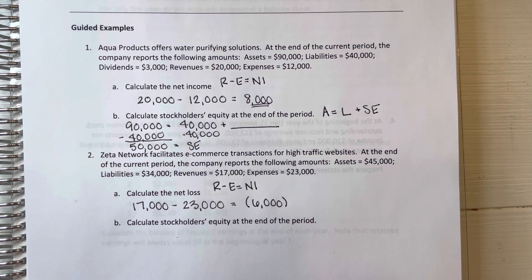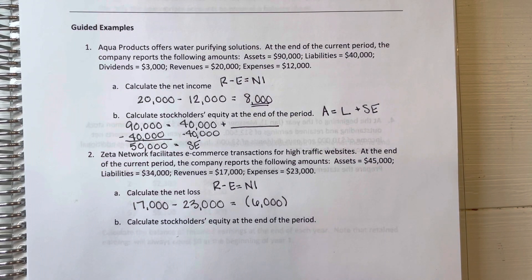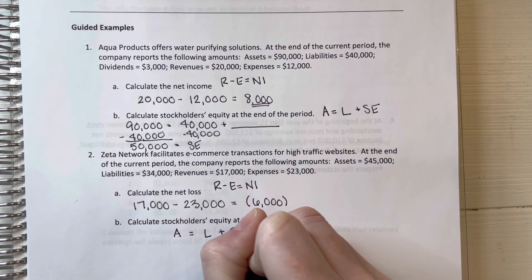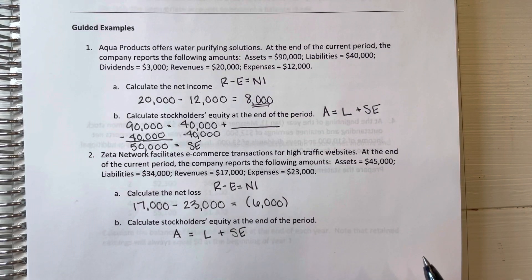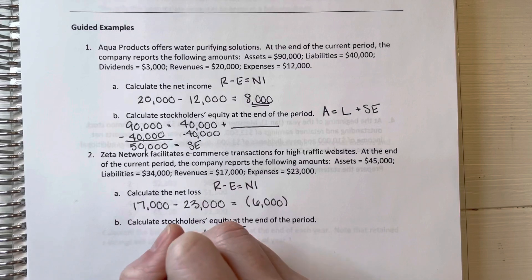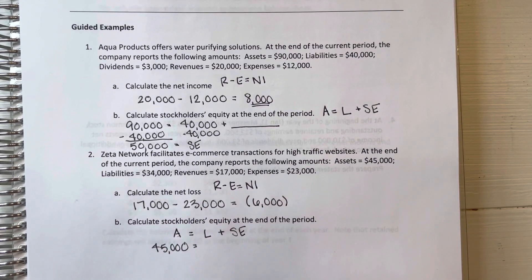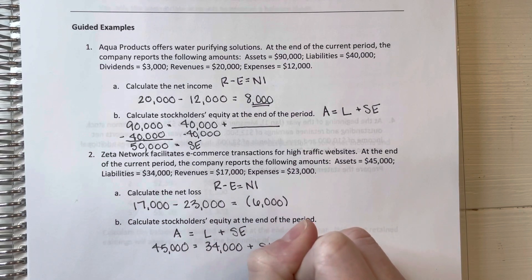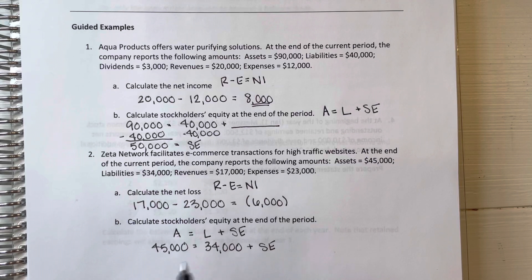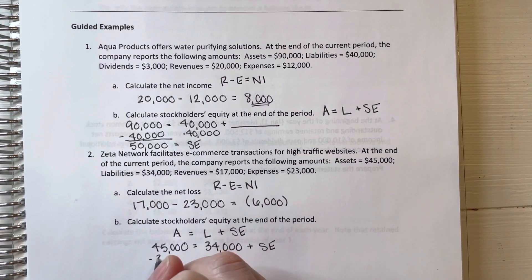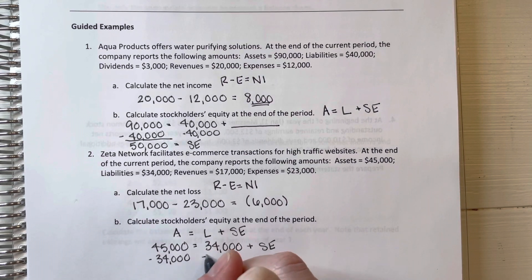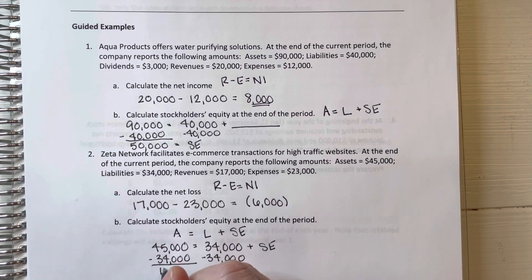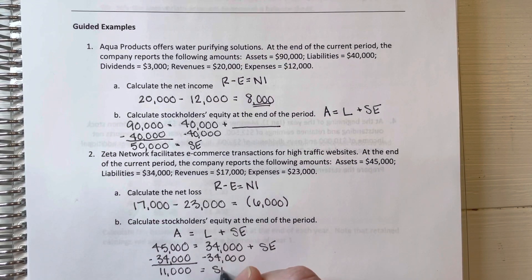Next up, just like above, we're going to calculate the stockholders' equity at the end of the period. Remember, we're going to use assets equal liabilities plus stockholders' equity to calculate our stockholders' equity. Our assets are $45,000. Our liabilities are $34,000. We can subtract $34,000 from both sides. We will get $11,000 equals our stockholders' equity.